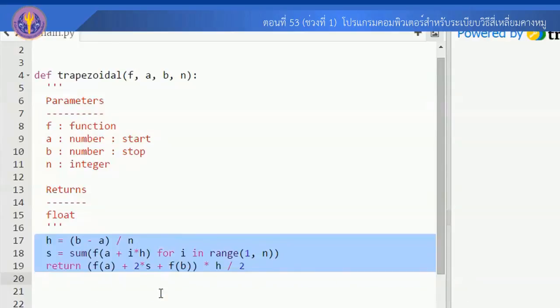A, B และ N มาให้ โดยที่ค่าความกว้างช่วง H ก็คือ b minus a หารด้วย n จากนั้นเมื่อเราได้ค่าความกว้างช่วงแล้ว